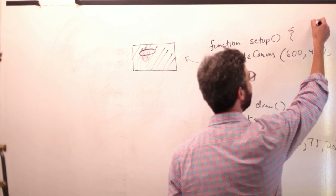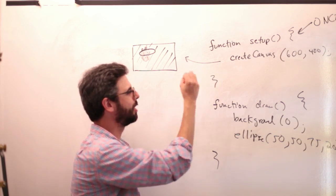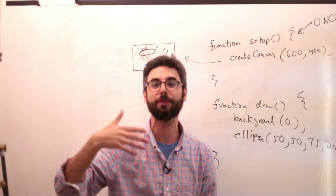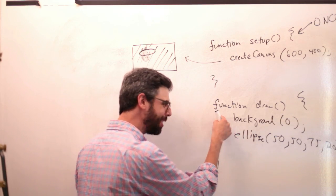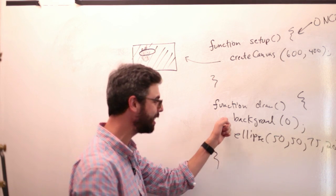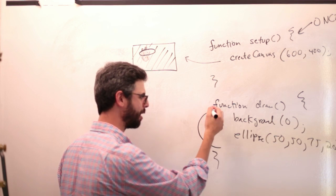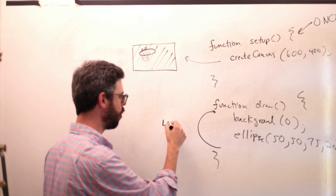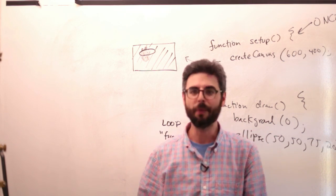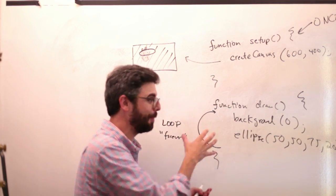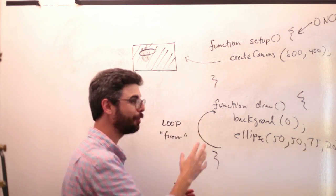How do they control that flow? Setup happens once at the beginning — when the program runs, the first thing that happens is setup, and it happens once. You don't want to create a canvas more than once. Draw, however, does something interesting. It runs through these instructions, and when it gets to the end, it goes right back to the beginning. Background, ellipse, to the end, right back to the beginning — this is known as a loop and it essentially happens forever, until a user closes the window. Setup happens once; draw loops over and over and over again.